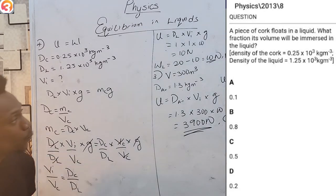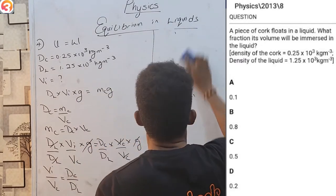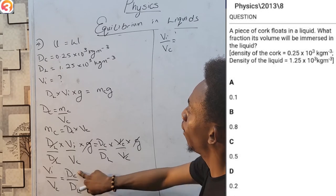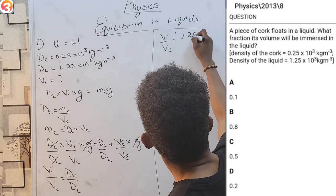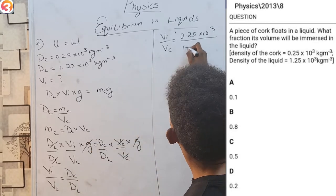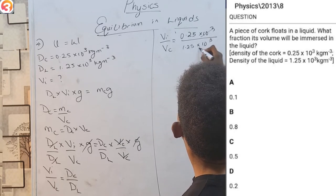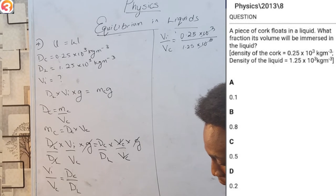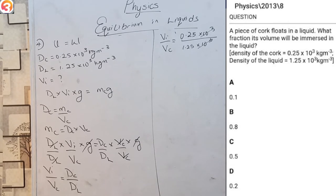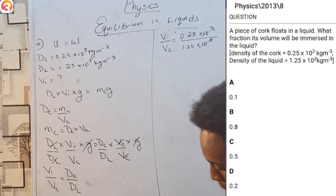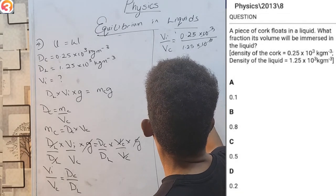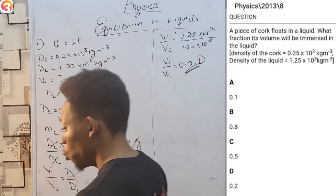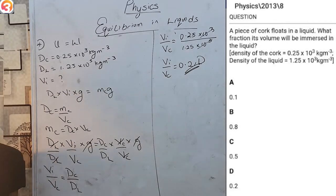So Vi/VC = 0.25 × 10³ divided by 1.25 × 10³. The powers cancel, leaving 0.25 ÷ 1.25 = 0.2. That is option D. Take your time, follow the steps, and you shall get your answer. Practice makes perfect — the more you practice, the faster you'll work on exam day.